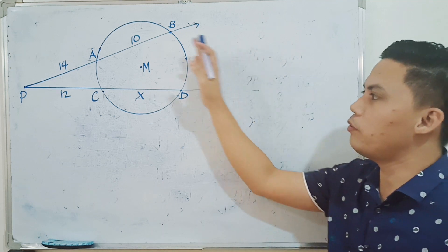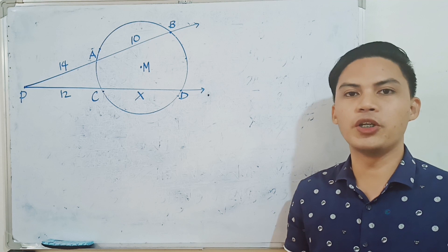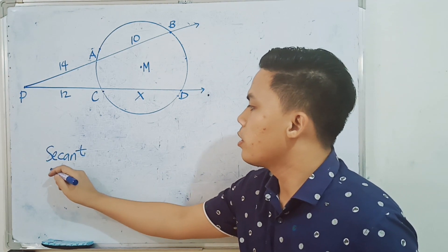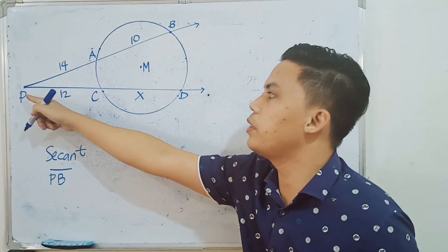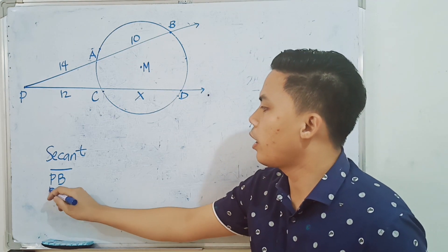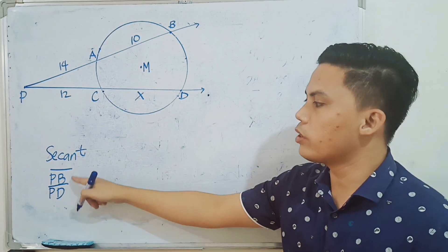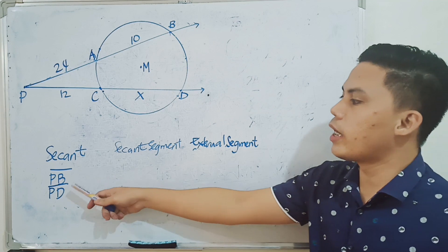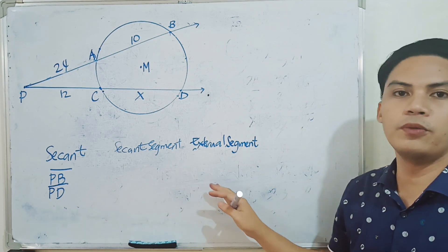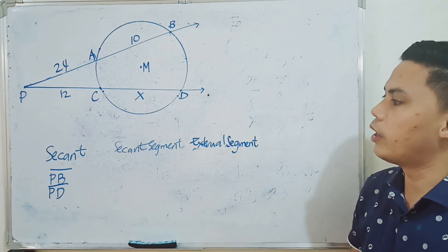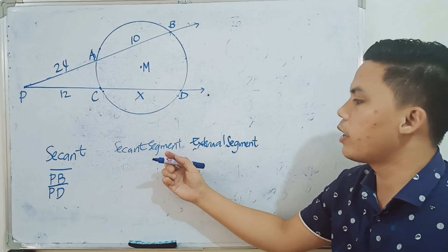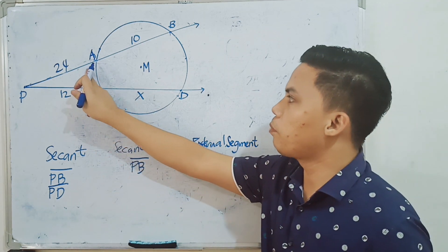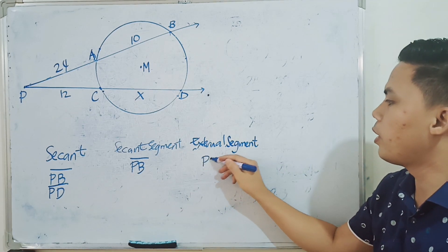Now let's discuss the second theorem. In this theorem, the two secants intersect at the exterior of the circle. Our two secants are segment PB and segment PD. The point of intersection is point P, which is outside circle M. Given secants PB and PD, we identify the secant segment and its respective external segment. For secant PB, the whole PB is the secant segment, and the external segment — the part outside the circle — is segment PA.